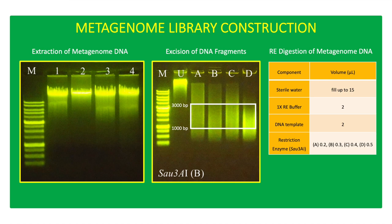Restriction enzyme digestion was carried out with 0.2, 0.3, 0.4, and 0.5 microliter SAU-3A1 restriction enzyme at 37 degrees Celsius for 10 seconds in a 10 microliter volume per reaction, which contains 2 microliters DNA and 2 microliters RE buffer.